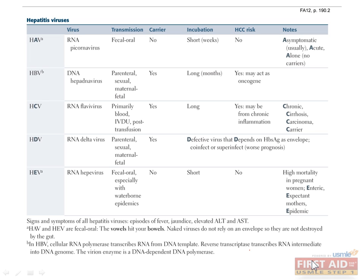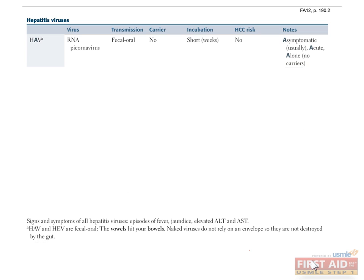Let's go over the hepatitis viruses, of which there are five types. Hepatitis A is often asymptomatic or will present with mild flu-like symptoms, jaundice, and watery diarrhea. The infection is self-limited and does not progress to chronic hepatitis or hepatocellular carcinoma.